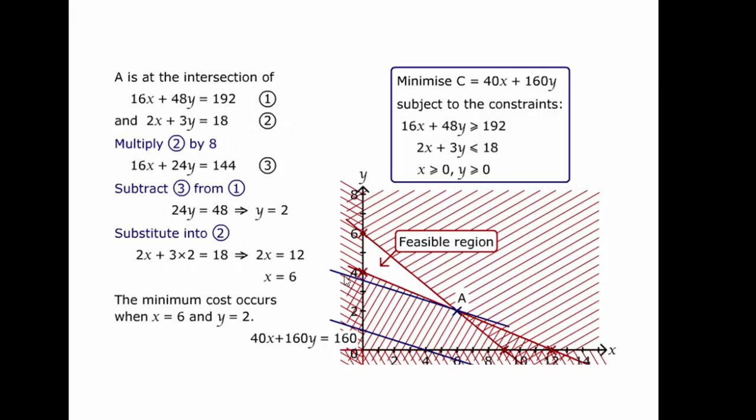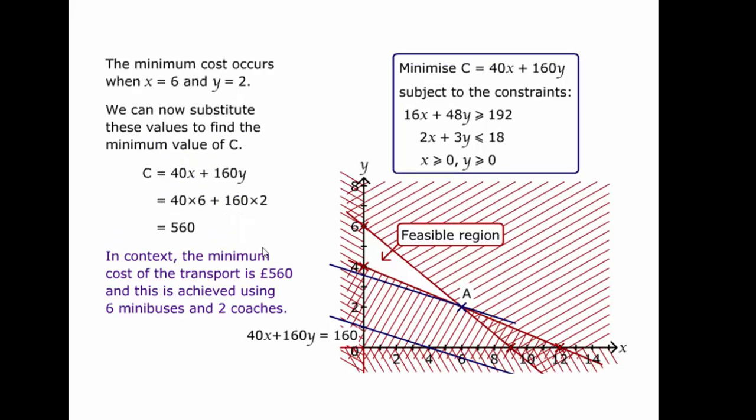To find the values, we can look at the two lines that intersect there. Well it's the two constraint equations, isn't it? If we solve them simultaneously, as you can see here, we get y equals 2 and x equals 6. That tells us that we would order 6 minibuses and 2 coaches. And our total cost, 40 times 6 plus 160 times 2 is 560 pounds. And that's the problem solved.